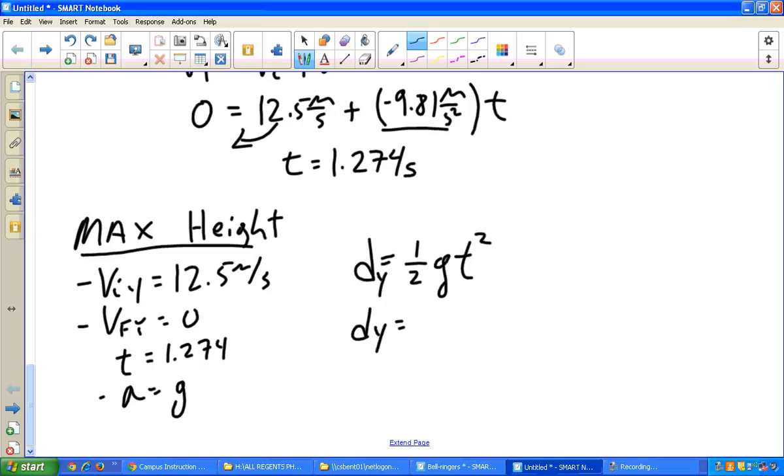So dy equals one half gravity times a time down of 1.274 seconds squared. And I go ahead and I get a dy, so this is our max height, of 7.96 meters. Go ahead and try the calculation yourself, make sure you get the same thing.